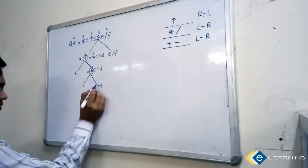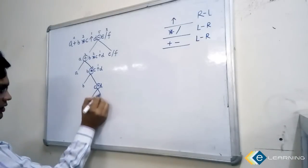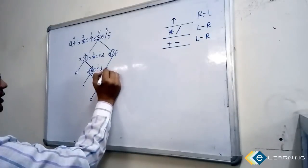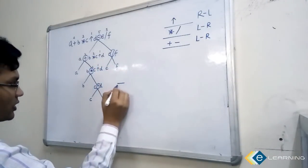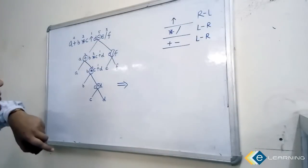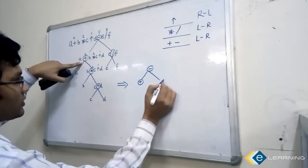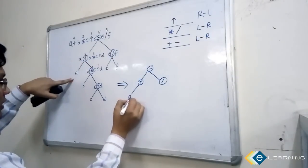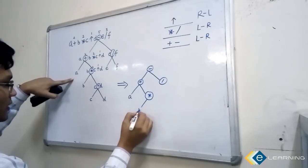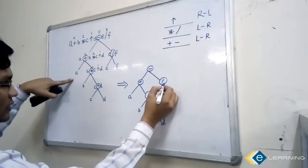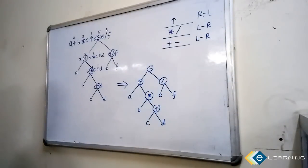Remember that power has c and d as its children. For the right sub-expression e divided by f, make divide the parent with e and f as its children. The corresponding expression tree is: minus as root, plus and divide as children, then a and star under plus, then b and power under star, with c, d under power, and e, f under divide.